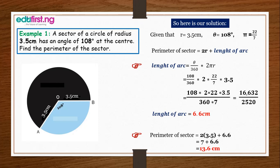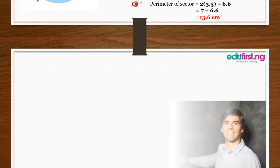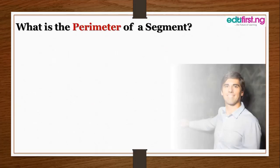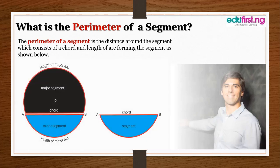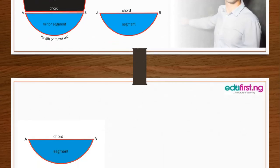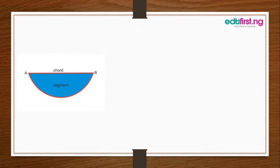That's it for the perimeter of a sector. Next, let's get to the perimeter of segments. The perimeter of a segment is the distance around the segment, which consists of a chord and the length of the arc forming the segment. We have the major segment and the minor segment. For emphasis, we'll be working with the minor segment — the blue shaded region. The perimeter is the length of the chord plus the length of the arc, the red boundary.